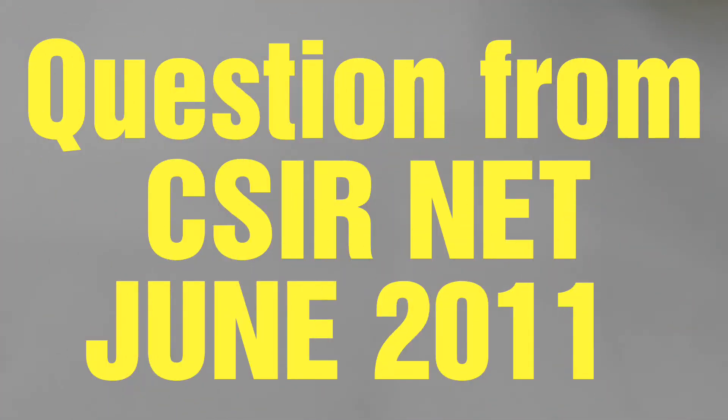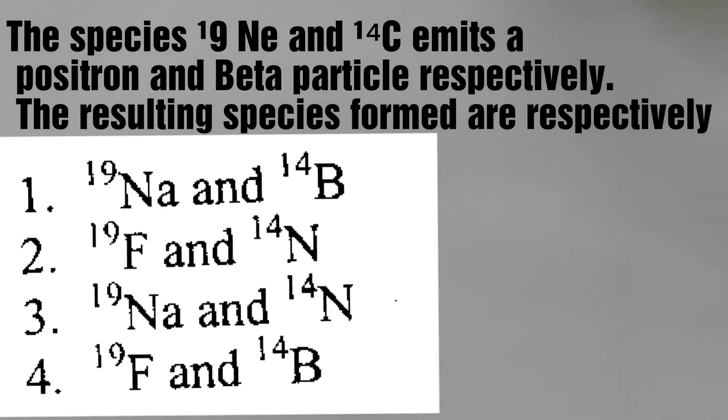Hello friends, in this video we will solve a question from CSIR NET June 2011. The species Neon-19 and Carbon-14 emit a positron and beta particle respectively. The resulting species formed are: